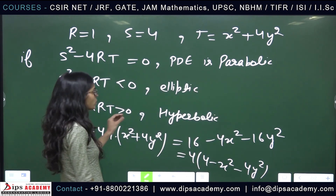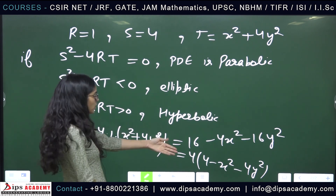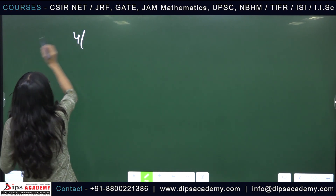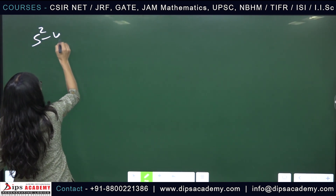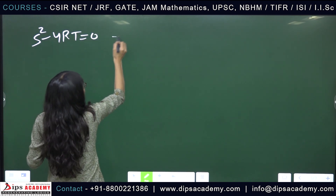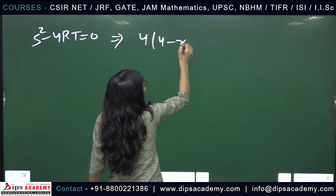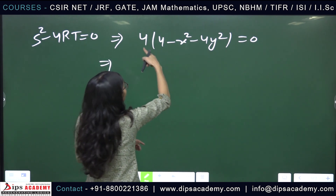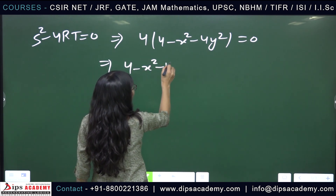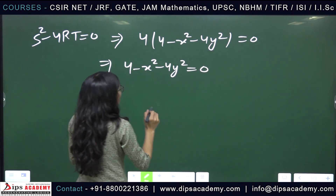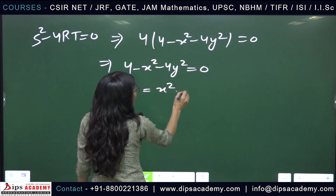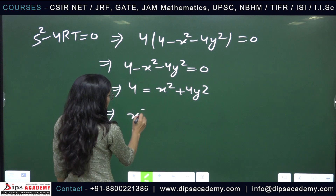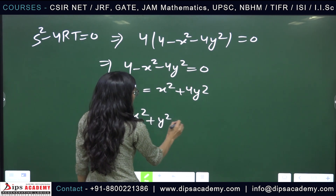For parabolic classification, we set this discriminant equal to 0: 4·(4 − x² − 4y²) = 0. Since 4 ≠ 0, we need 4 − x² − 4y² = 0, which gives x² + 4y² = 4, or equivalently x²/4 + y² = 1.